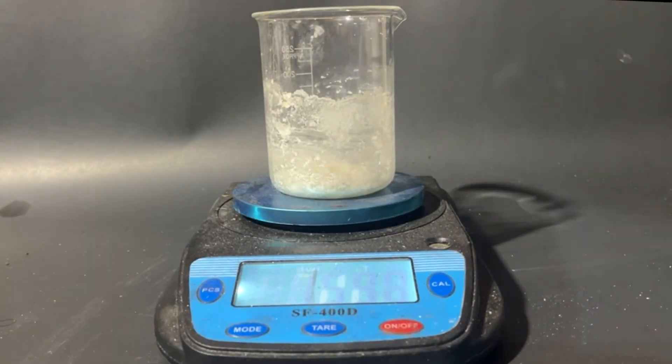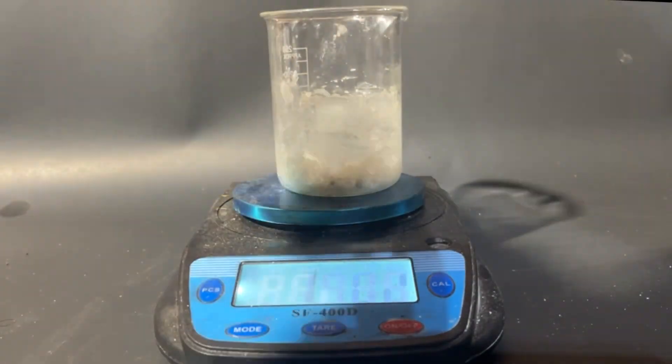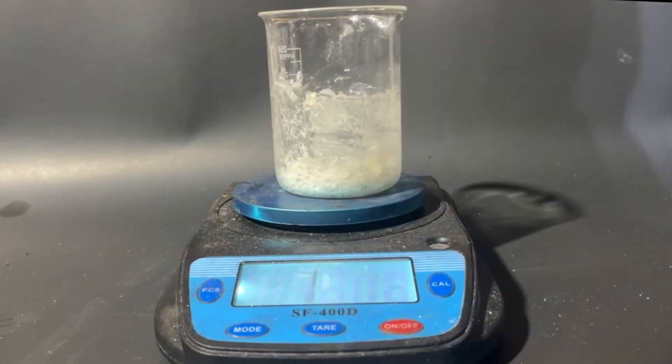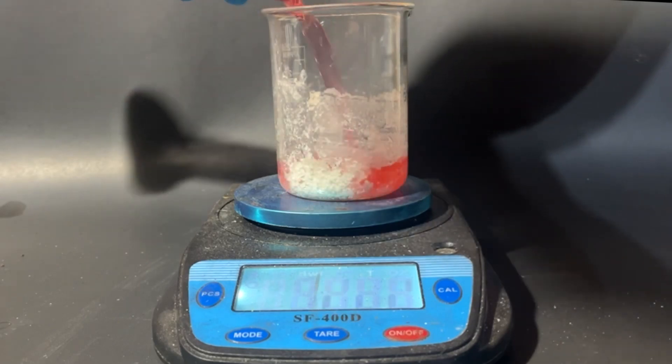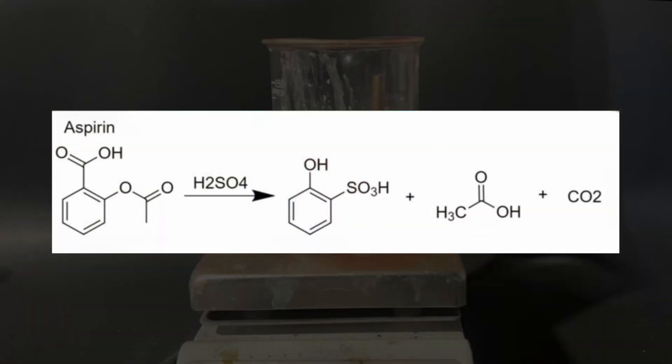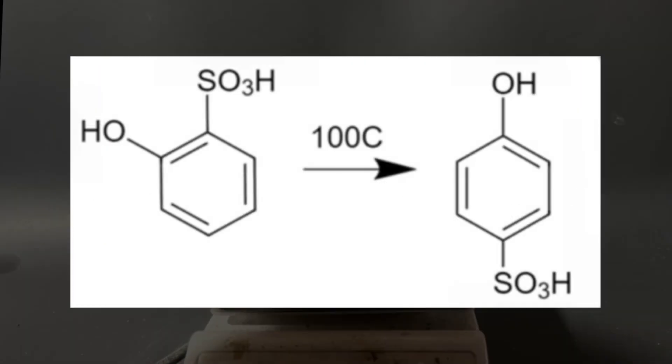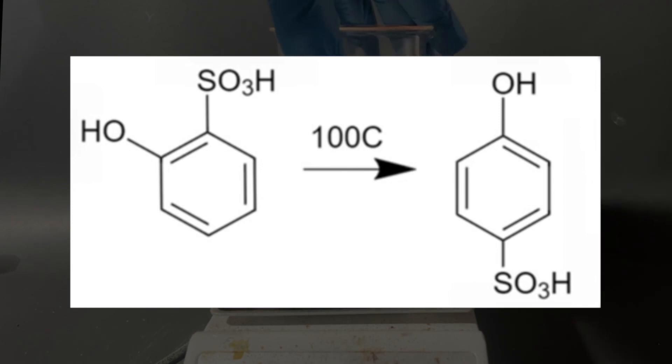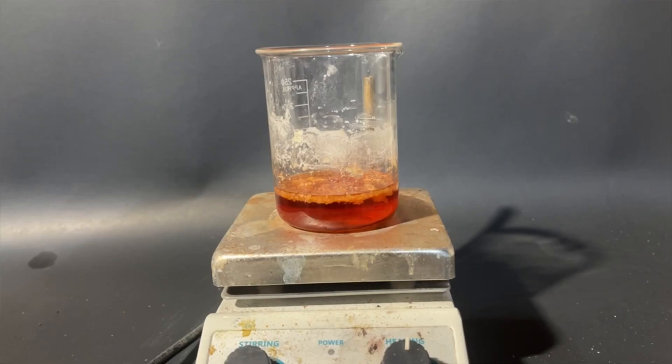Now that the acetyl salicylic acid is all filtered through, I can weigh out 10 grams of it and add that to 40 milliliters of concentrated sulfuric acid. This will add a sulfonic acid group to the molecule, but the issue with this group is that it's in the wrong place. To correct it, all I have to do is heat the solution up to 100 degrees Celsius, which turns the solution black for some reason. I don't know.